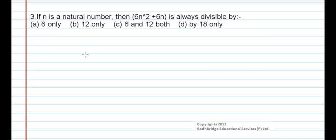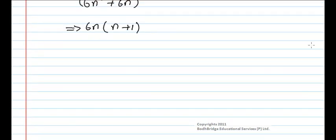Given we have 6n² + 6n. So we can take 6n common, so that is n plus 1. So 6n(n+1).